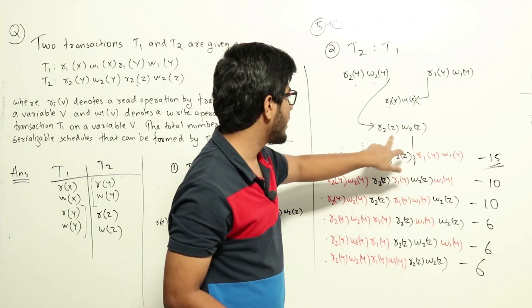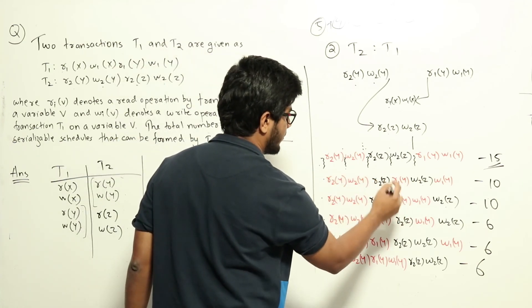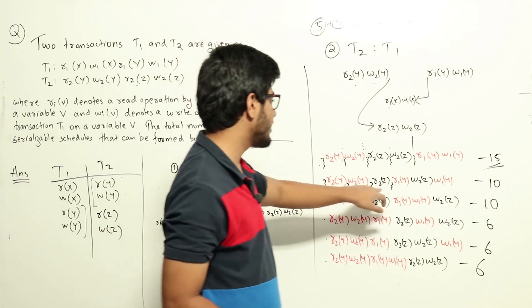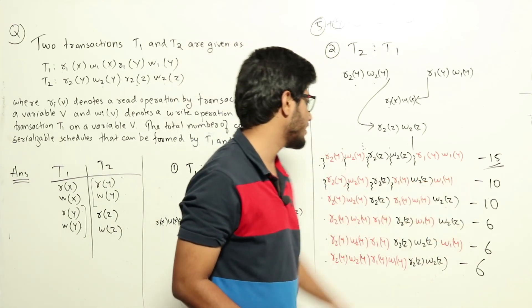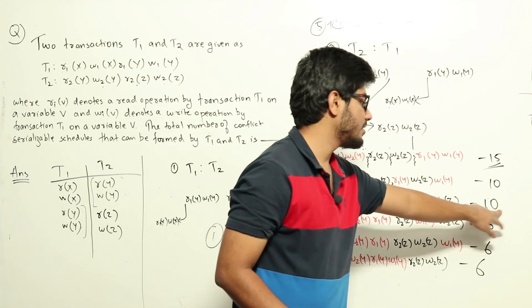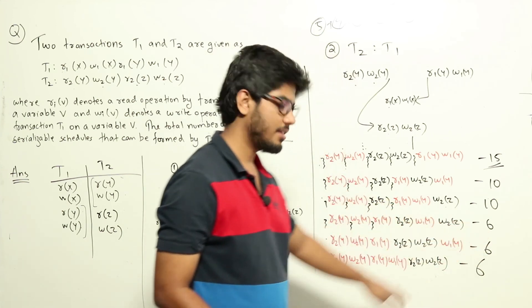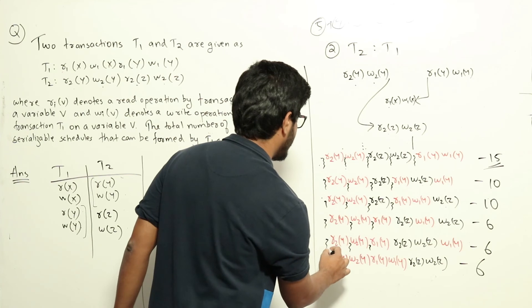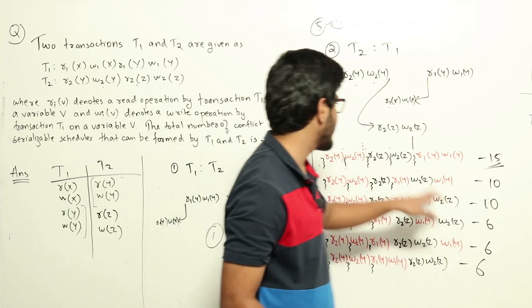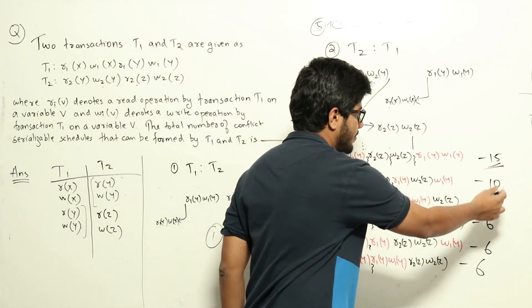Applying the same counting logic to each of the six arrangements: the second arrangement has 4 available gaps to the left of R1(Y), giving 10 ways; the third also gives 10 ways; the fourth has 3 gaps giving 6 ways; the fifth has 3 gaps giving 6 ways; and the sixth also has 3 gaps giving 6 ways. So the counts per arrangement are: 15, 10, 10, 6, 6, 6.